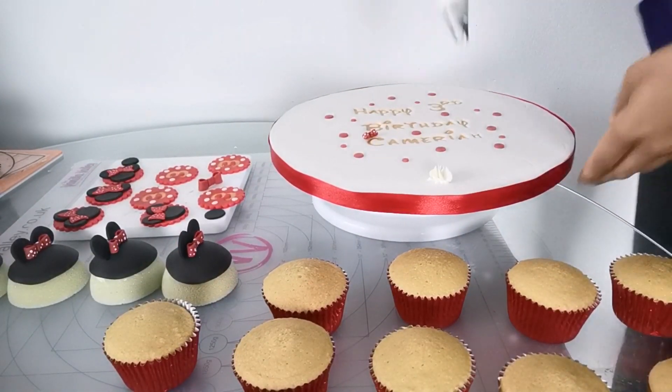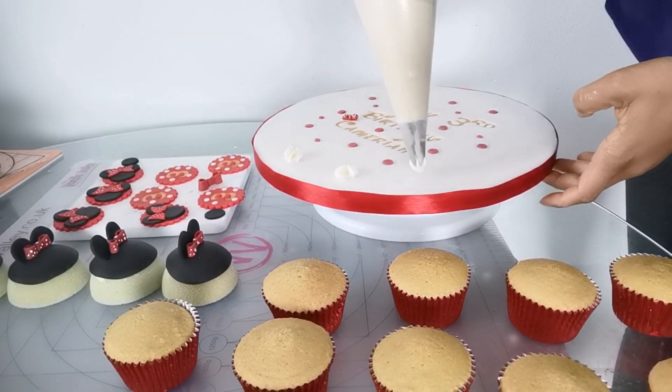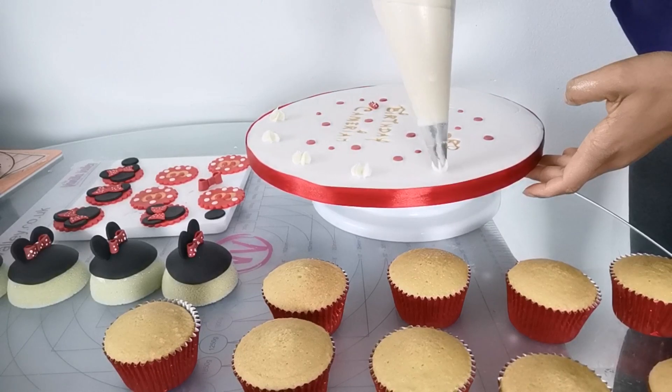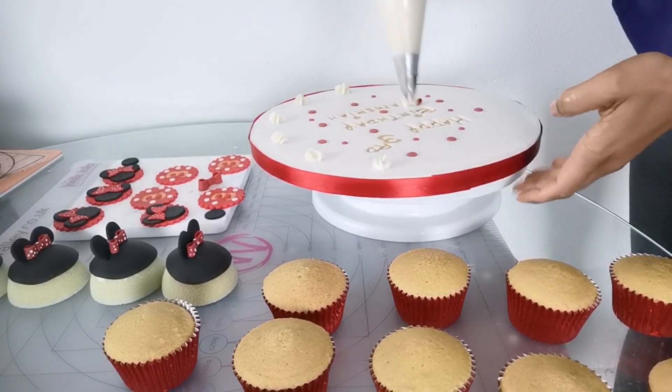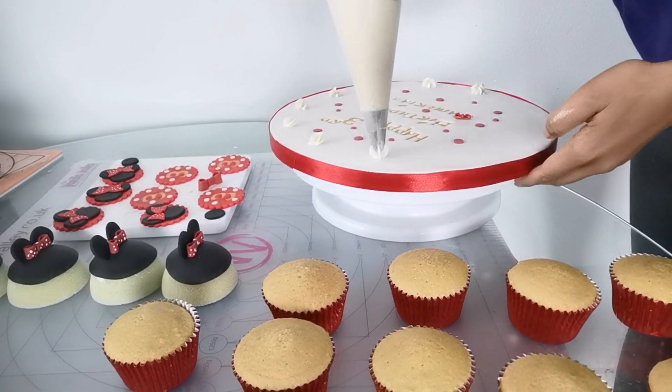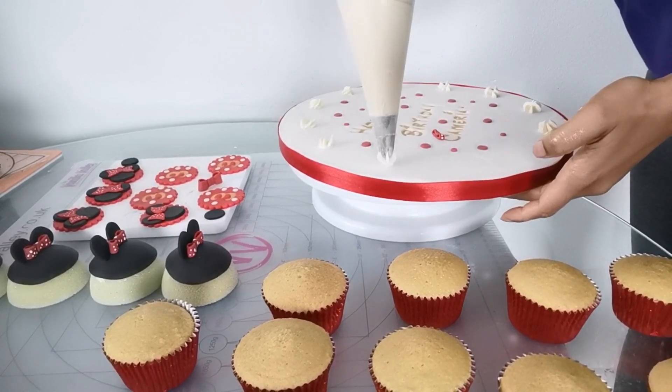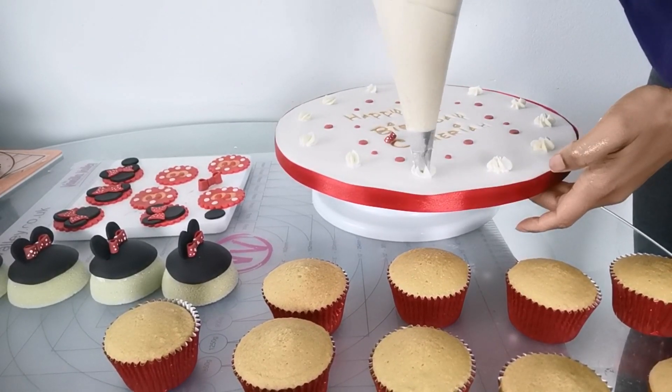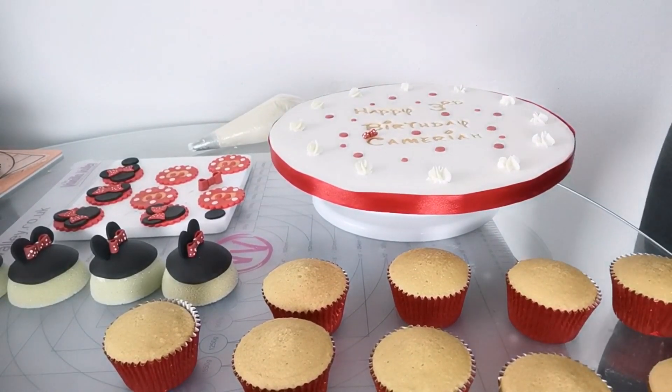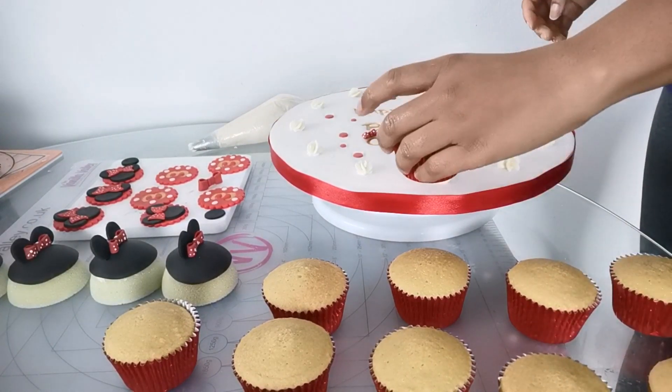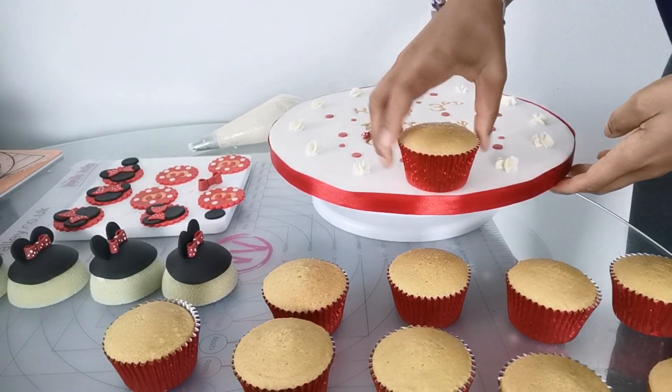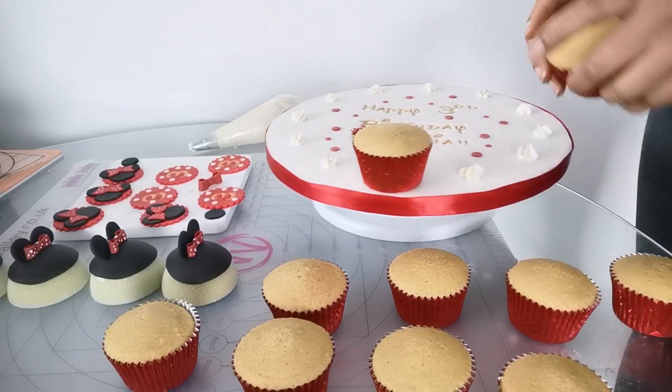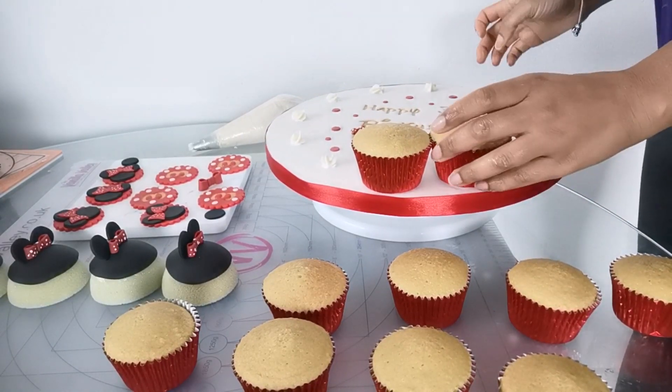Now it's time to stick our cupcakes to the board. I'm just dabbing a bit of buttercream in between the impressions that I made earlier with the cupcakes. My buttercream recipe is 250 grams of butter to 250 grams of icing sugar. That will do 12 cupcakes and you will still have some left over.